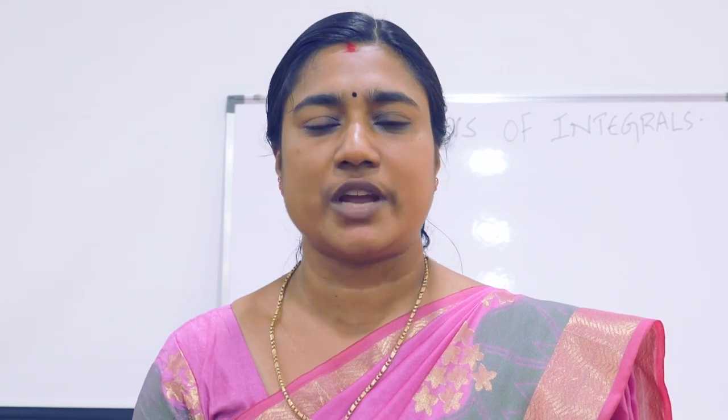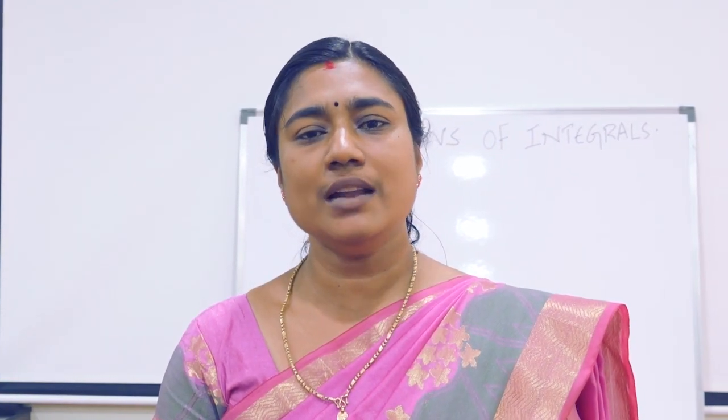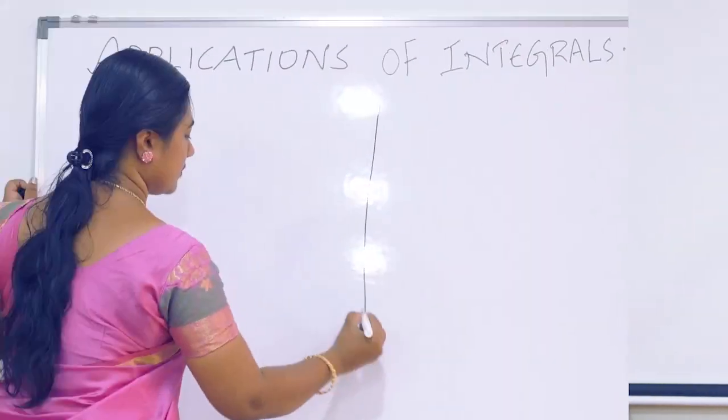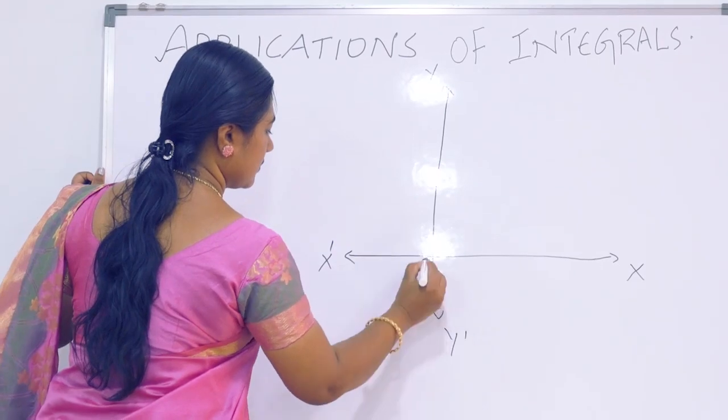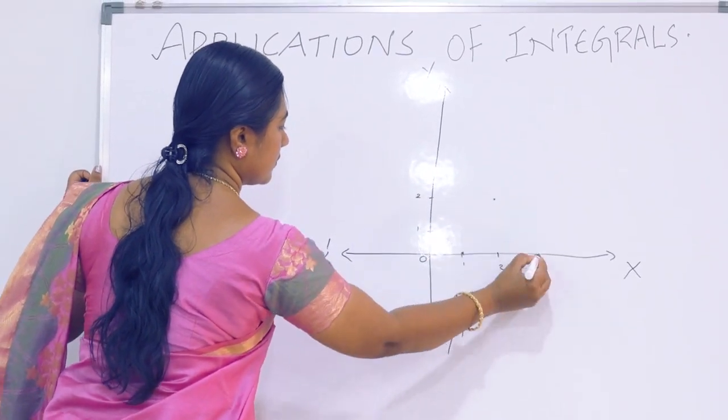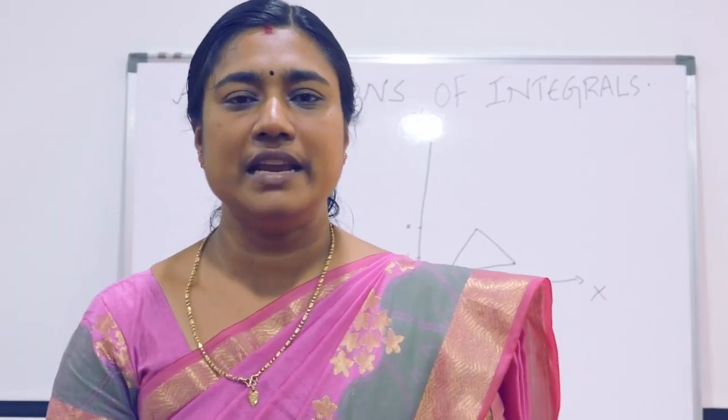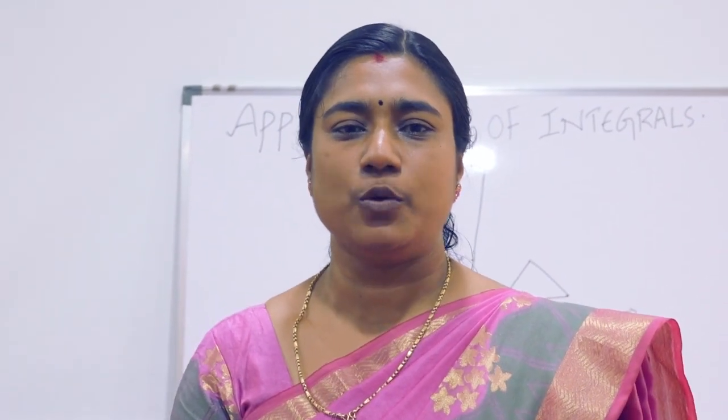Using integration, we shall find the area of region bounded by the triangle whose vertices are (1,0), (2,2), and (3,1). First, make a rough sketch of the figure under consideration. Mark the region whose area is to be calculated.